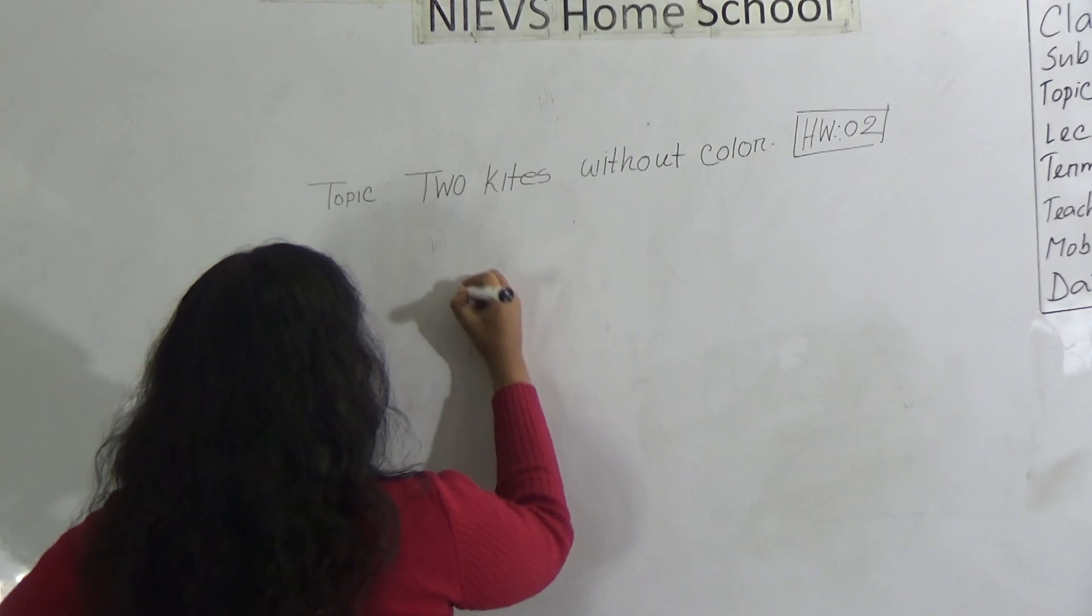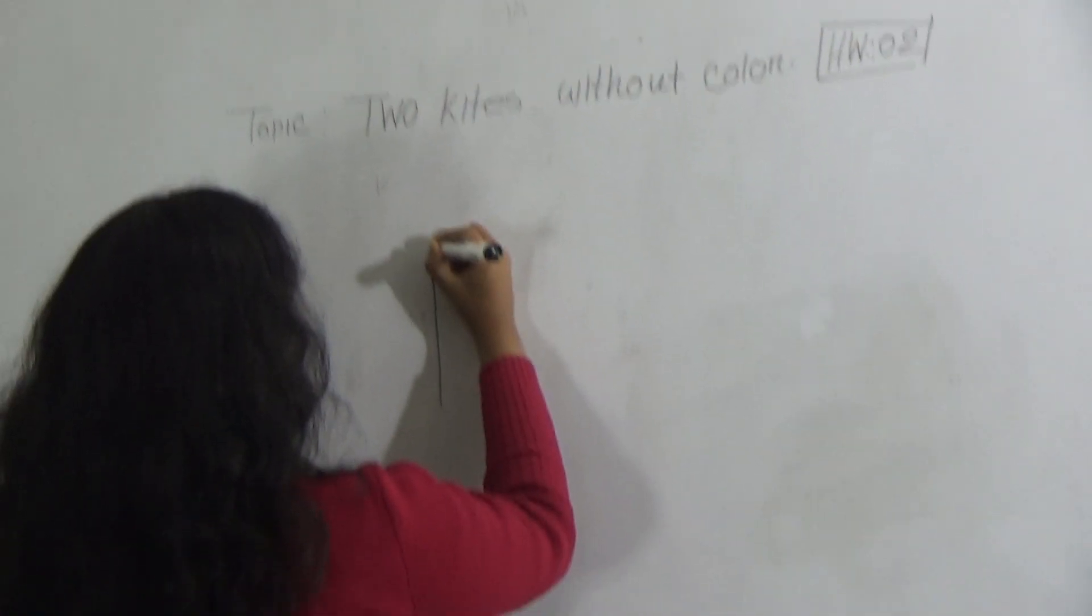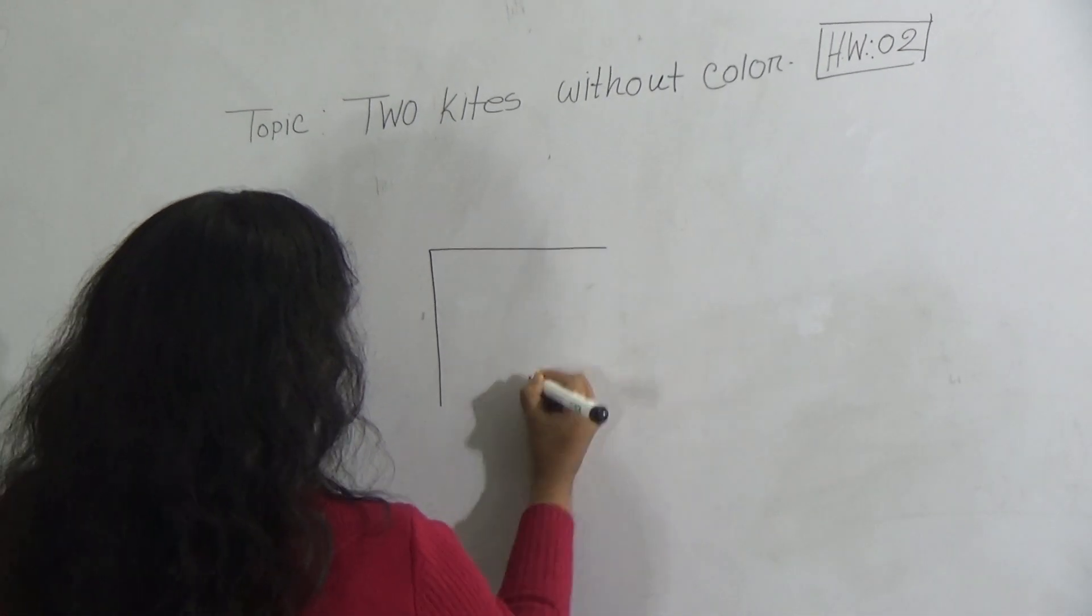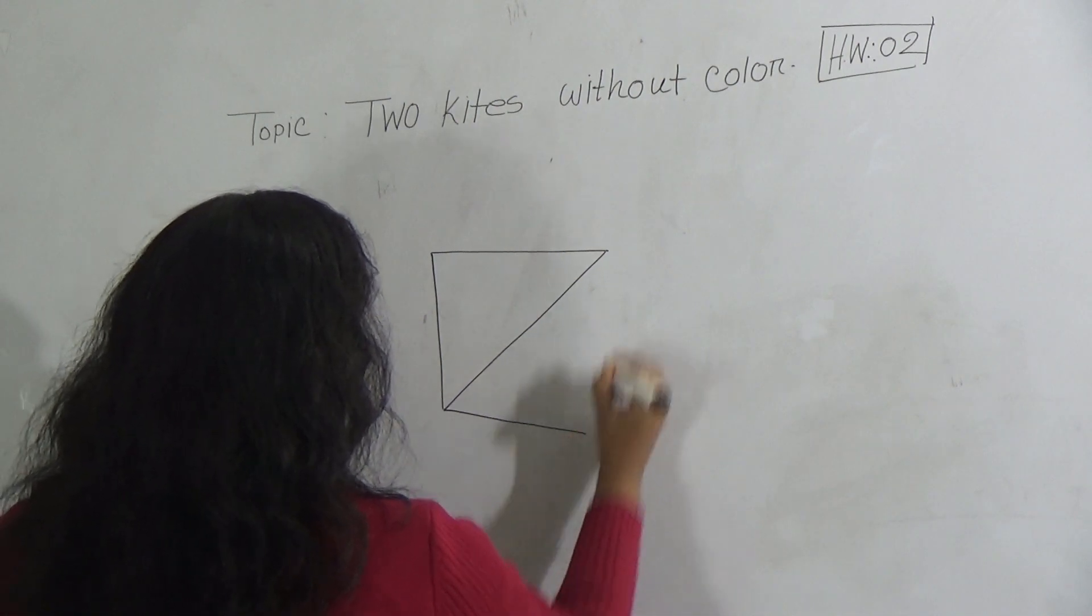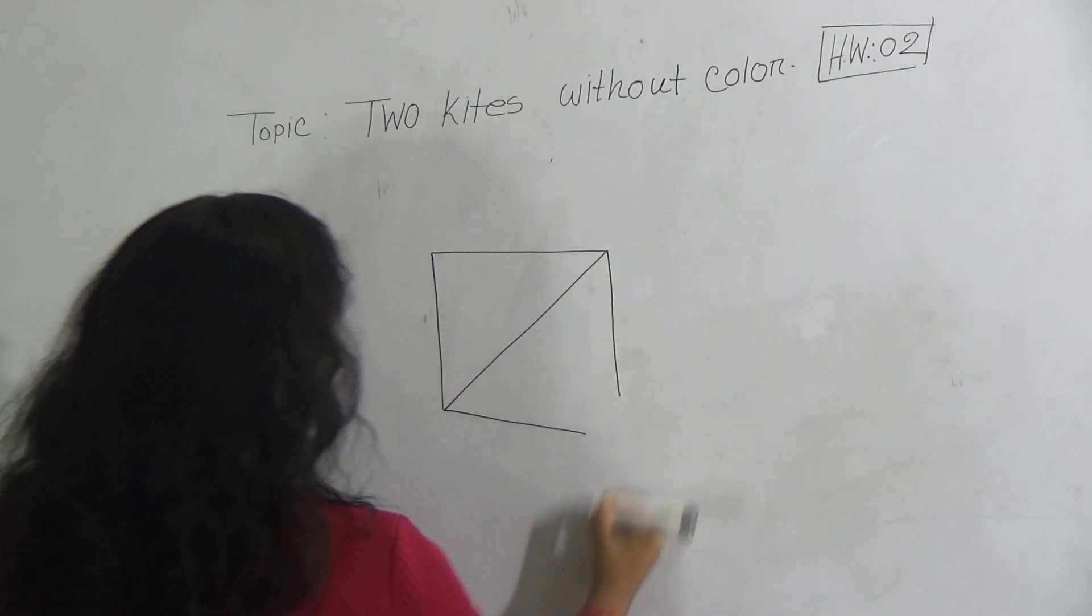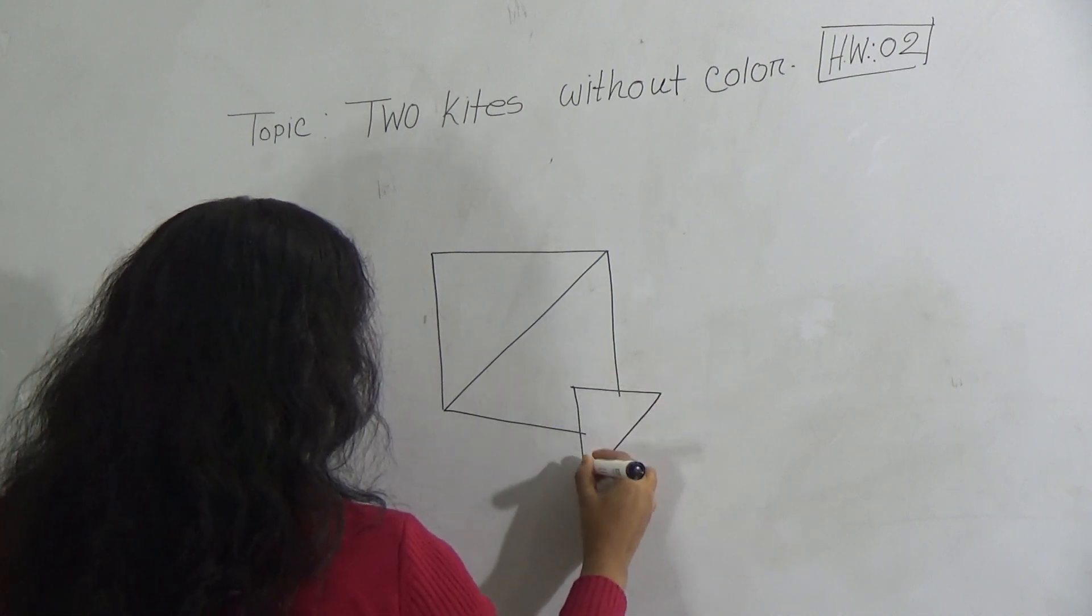First, you learn how to draw a triangle. So everyone draw a triangle like this. And then join here to here, and then draw more angle lines and draw a tiny triangle.